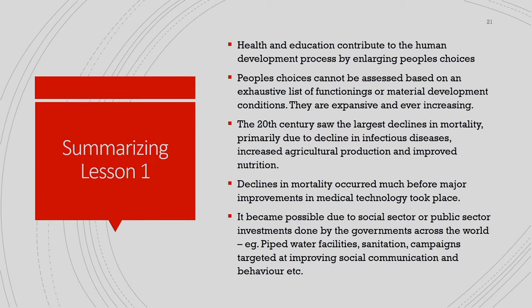Let me summarize this lesson. First, health and education contribute to the human development process by enlarging people's choices. Second, people's choices cannot be assessed based on an exhaustive list of functionings or material development conditions alone — they are expansive and ever-increasing. Third, the 20th century saw the largest declines in mortality primarily due to decline in infectious diseases, increased agricultural production and improved nutrition. Fourth, declines in mortality occurred much before major improvements in medical technology took place from the 1940s onwards. Finally, this became possible due to social sector or public sector investments done by governments — piped water, sanitation, campaigns targeted at improving social communication and behaviour.